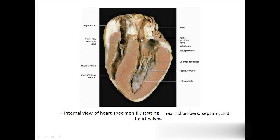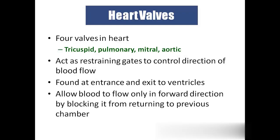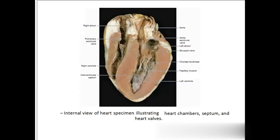This is a semilunar wall which is present at the entry of the aorta to control the flow of blood. And this is the interventricular septum, interatrial septum, right atrioventricular septum, and left atrioventricular septum.